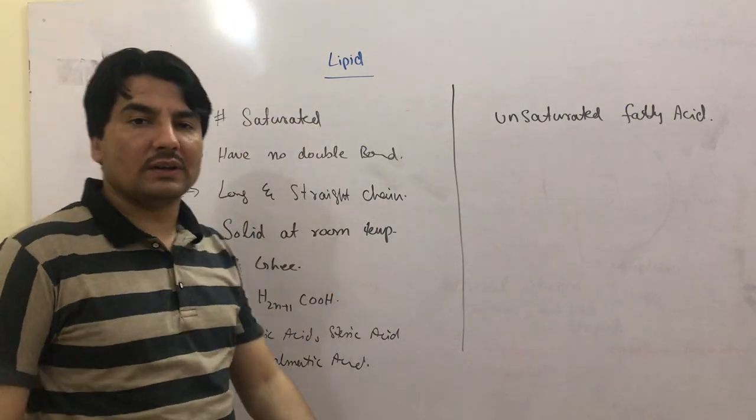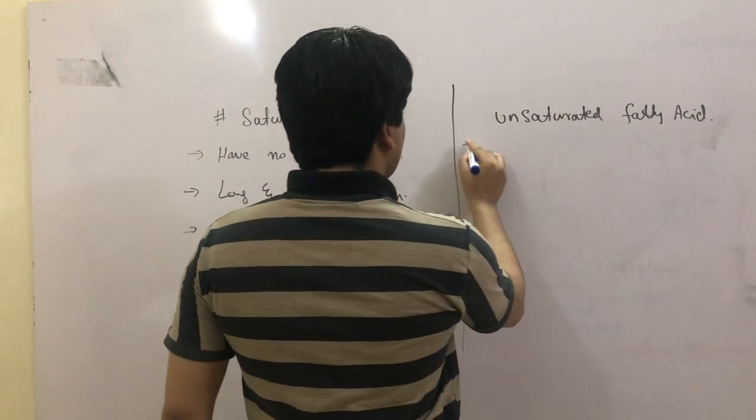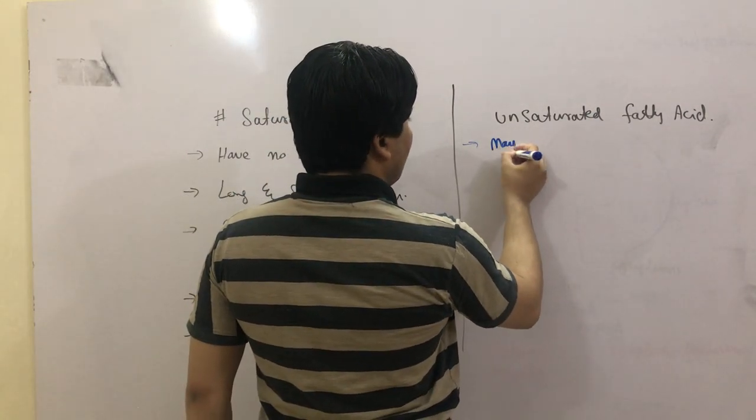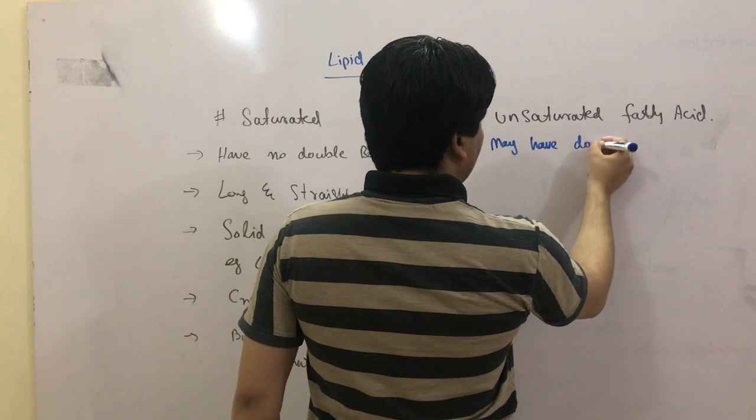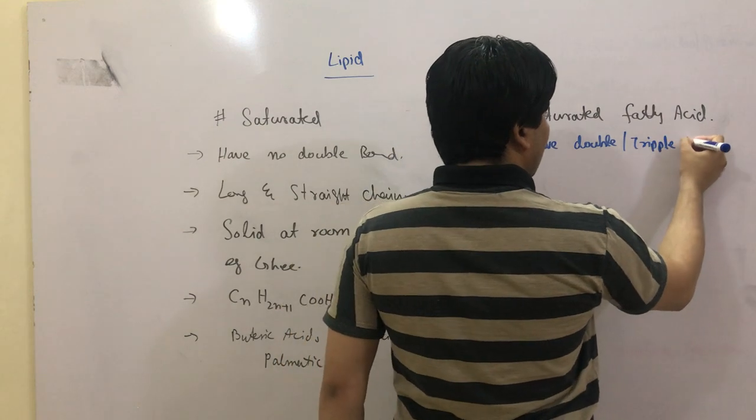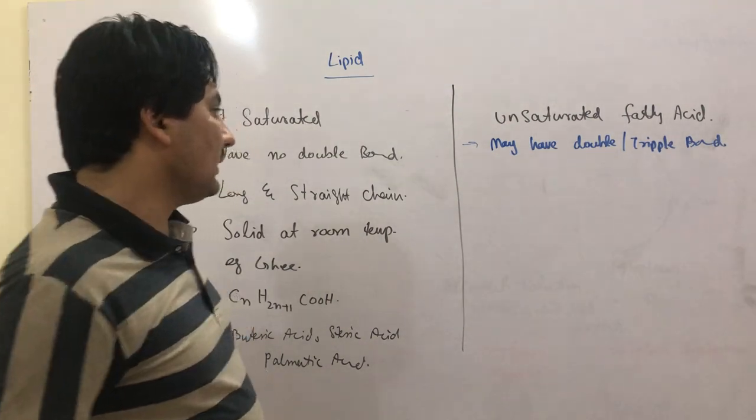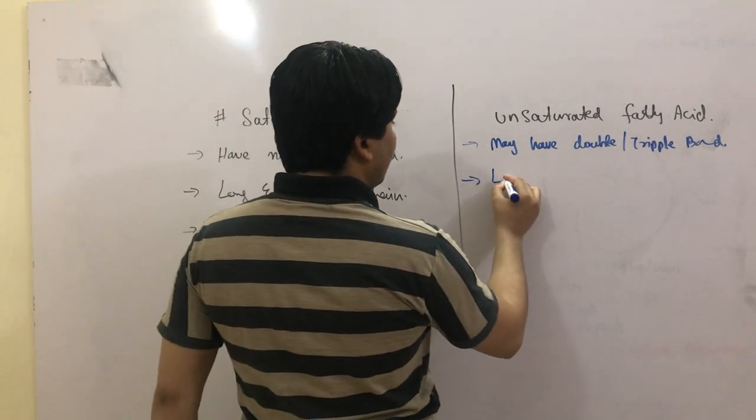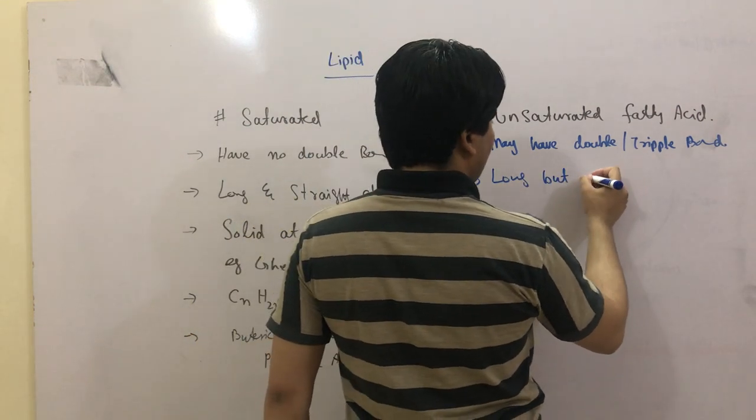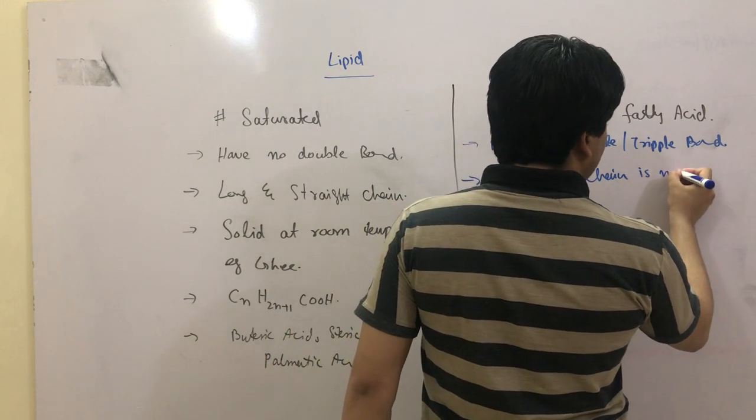The second class, which is the most important as well, is known as unsaturated fatty acid. These have one double or triple bond, sometimes even more. These are long chains but the chains are not straight.